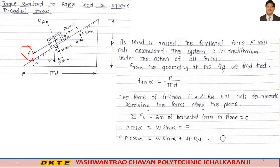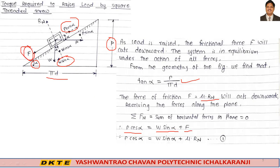From the geometry of the figure, we find that tan alpha equals pitch P divided by pi·D. The force of friction F equals mu·Rn, and will act downward. Resolving the forces along the plane — summation of horizontal forces equals zero: P·cos alpha (left to right) equals W·sin alpha plus F, where F equals mu·Rn. This is equation number 1.